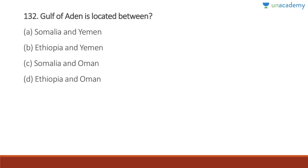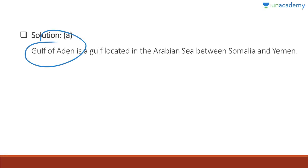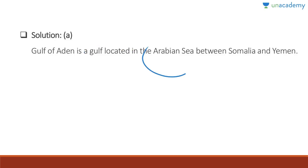Question 132: The Gulf of Aden is located between Somalia and Yemen. Answer is A. The Gulf of Aden is located in the Arabian Sea; Yemen is in the Middle East and Somalia is in the Horn of Africa. These location-based map questions are commonly asked in exams.